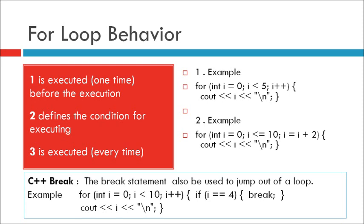Statement 1 sets a variable before the loop starts: int i = 0. Statement 2 defines the condition for the loop to run — i must be less than 5. If the condition is true, the loop will start over again; if it is false, the loop will end. Statement 3 increases the value: i++ each time the code block in the loop has been executed.